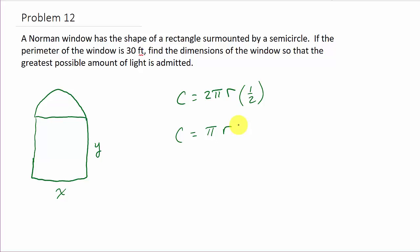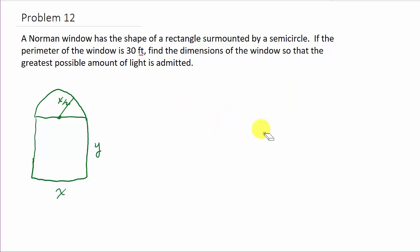The radius of the semicircle is the distance from the center out to the edge. That distance is the same as half the width X, so the radius is X over 2. Therefore, the semicircle arc length is π times X over 2, which we can write as π over 2 times X.